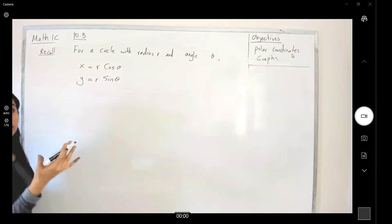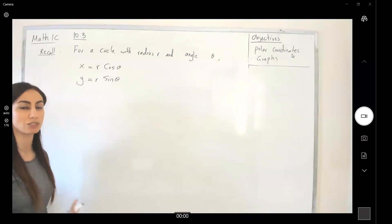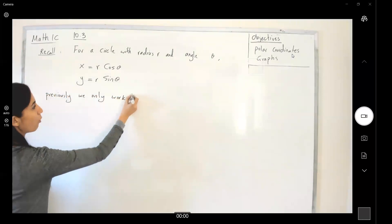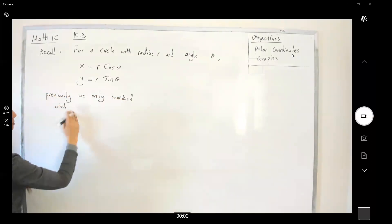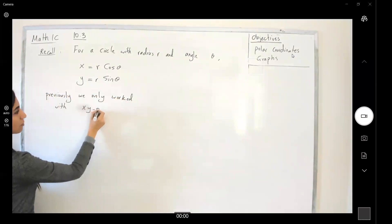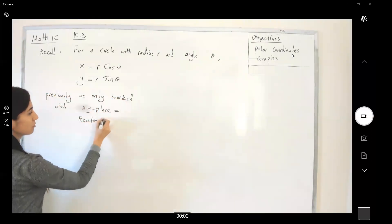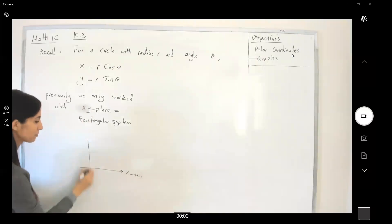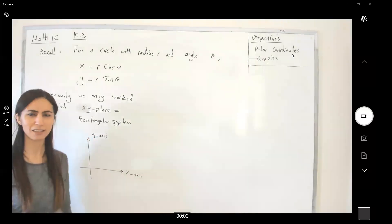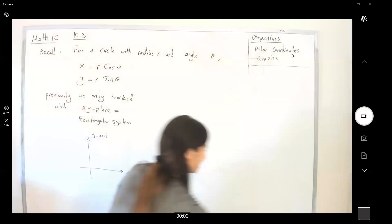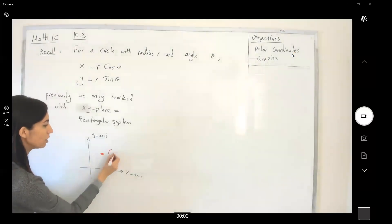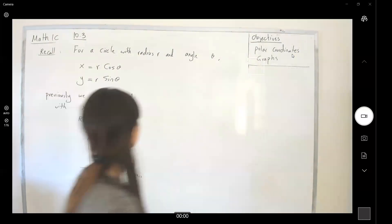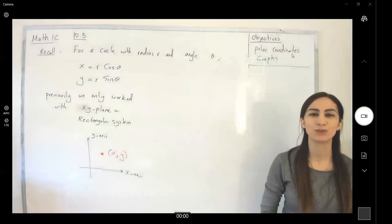Previously, we only worked with the x, y plane — also called the rectangular or Cartesian coordinate system — where you have an x-axis, a y-axis, and in 3D a z-axis. A point is written as x comma y, with a first and second coordinate. Now, this r and theta helps us define a new coordinate system, moving from the Cartesian system to a new one.